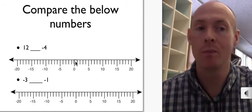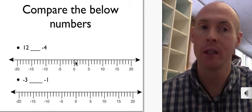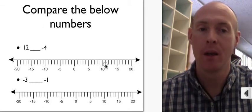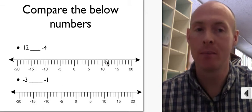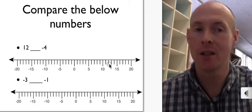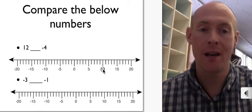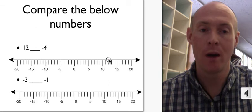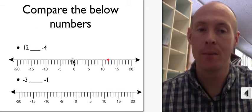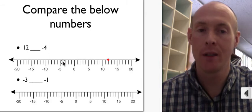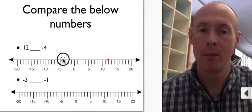12 and negative 4. First thing I want to do is plot where is 12 and where is negative 4. You'll notice that on my number line, every five integers are labeled, but still there's little integer lines that we can use to represent integers. So 10, 11, 12. Here's 12, negative 4, negative 1, negative 2, negative 3, negative 4, and we'll plot that right there.